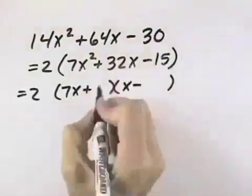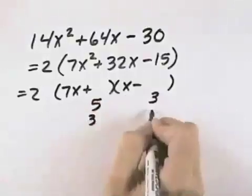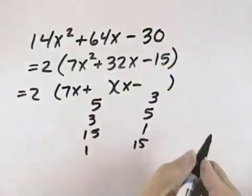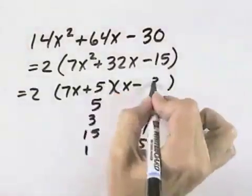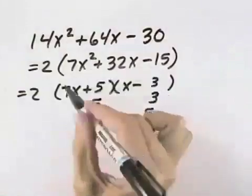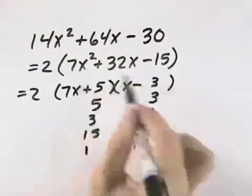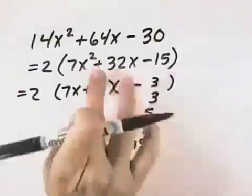For the last term to be a 15, we can try 5 and 3, 3 and 5, 15 and 1, or 1 and 15, until we find one that will work. Looking at this, if we try the 5 with the 3, we get a positive 5x and a negative 21x. Well, positive 5 and negative 21 does not add to 32, so that combination will not work.